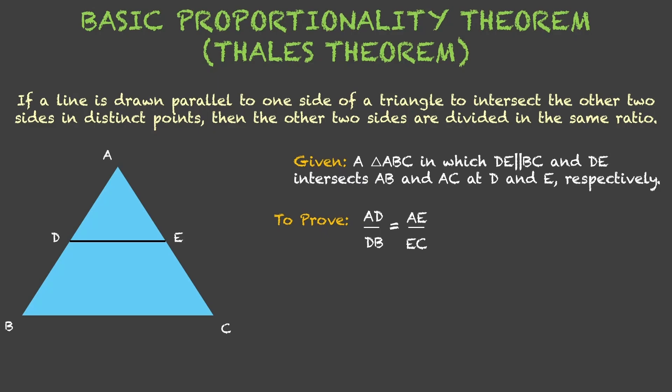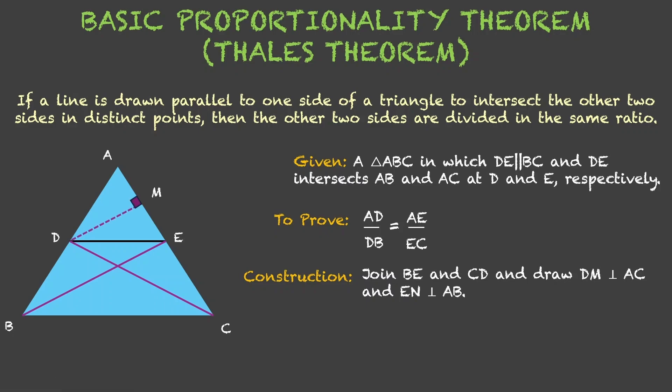Let us do one thing. Let us do a little construction. We will join BE and we will join DC. And now we will draw DM perpendicular to AC. One more perpendicular which will be EN which is perpendicular to AB.